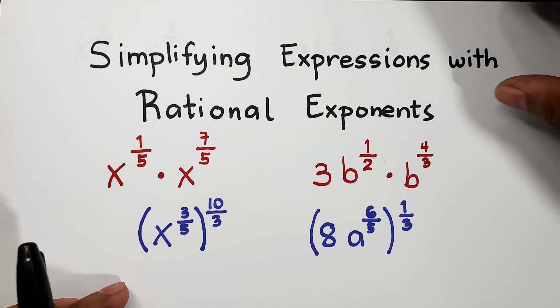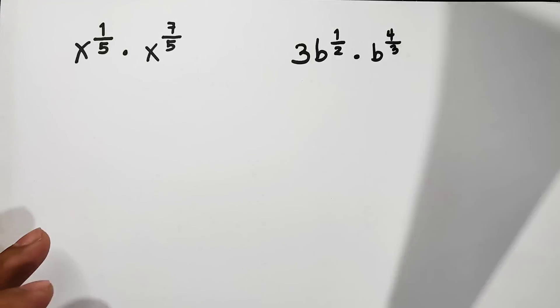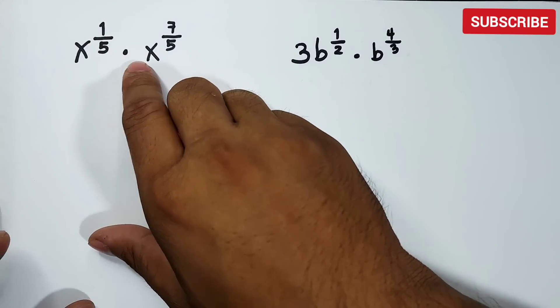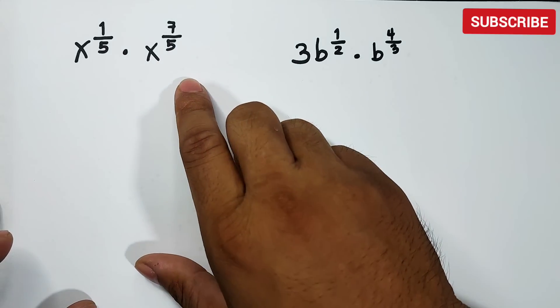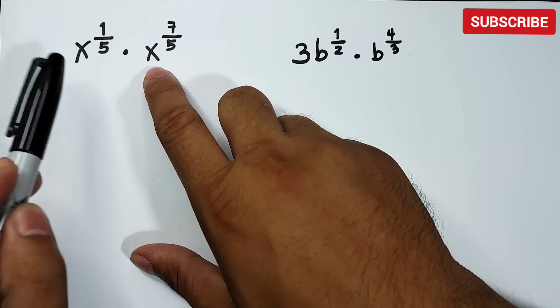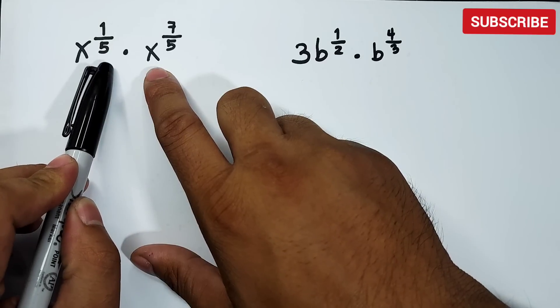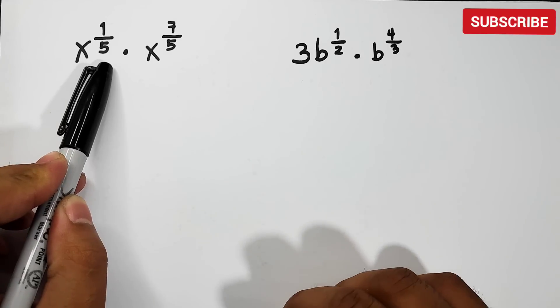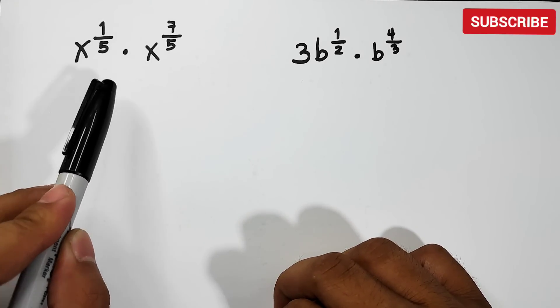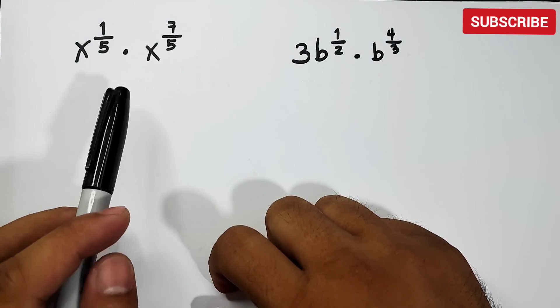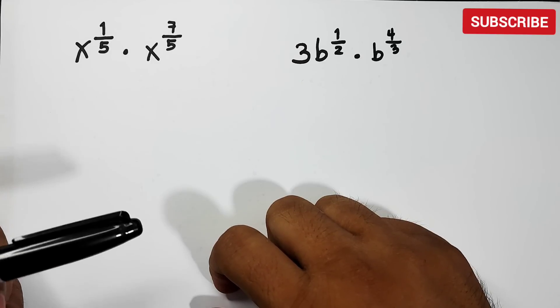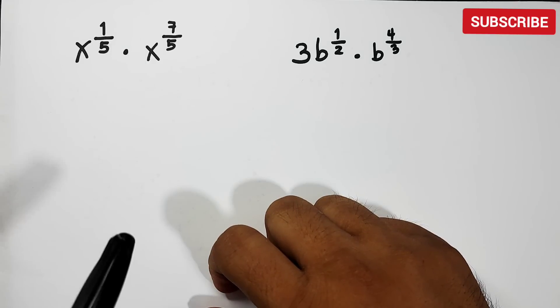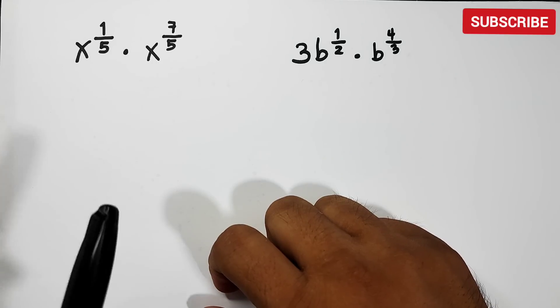let's do this topic. So what we have here is the first two examples that we have. And as you can see, we have in the first one x raised to 1 over 5 times x raised to 7 over 5. As you can see, the bases are x and the exponents of x are 1 over 5 and 7 over 5, which are examples of rational exponents. Now how are we going to simplify this one? Basically we will just apply the laws of exponents and our knowledge on how to simplify fractions.